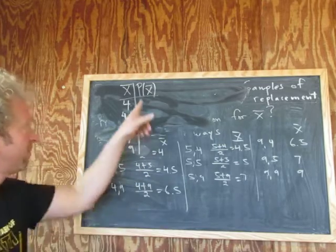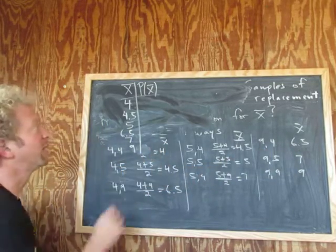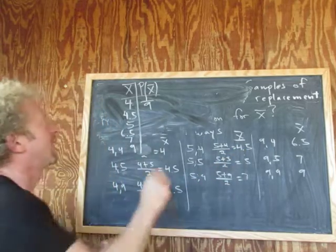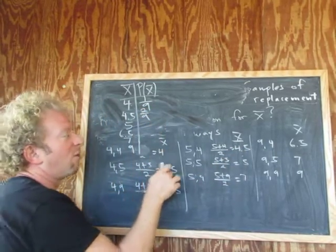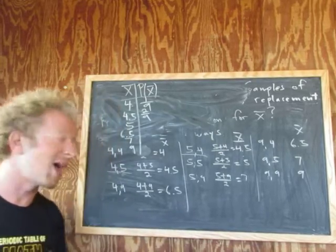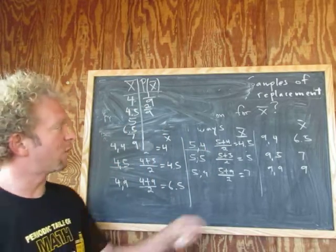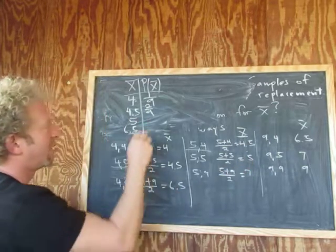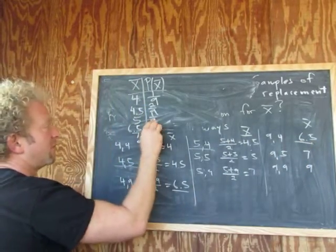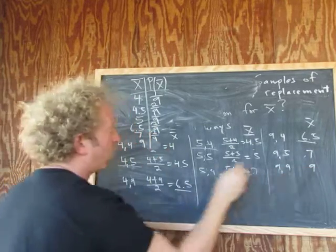Now we're going to fill in all the possible probabilities. For four, there's only one four, so the probability that x-bar equals four is one over nine. For four point five, there are two — so it's two over nine, because you either pick this sample or this sample, and 'or' in probability means you add: one ninth plus one ninth equals two ninths. For five, there's one five, so one ninth. For six point five, there are two, so two ninths. Seven would also be two, so two ninths. And nine would be one, so one ninth.